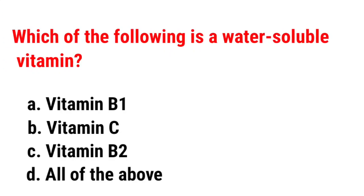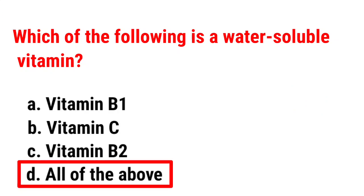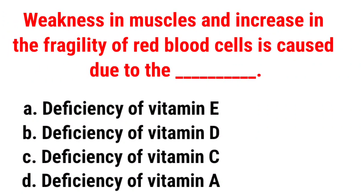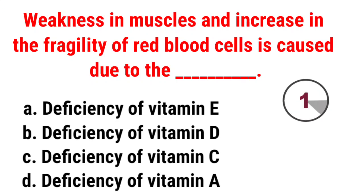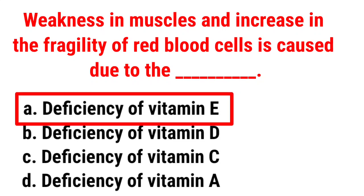Which of the following is a water-soluble vitamin? Correct answer is all of the above. Weakness in muscles and increase in the fragility of red blood cells is caused due to the... Correct answer is deficiency of Vitamin E.